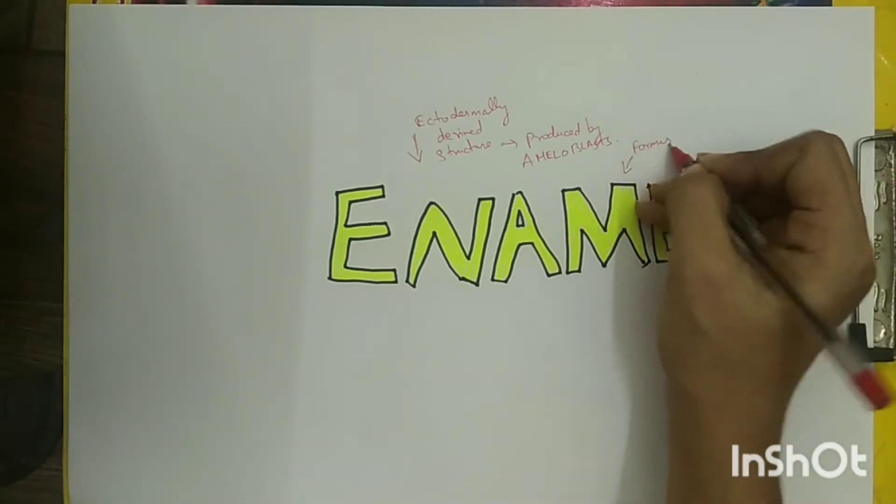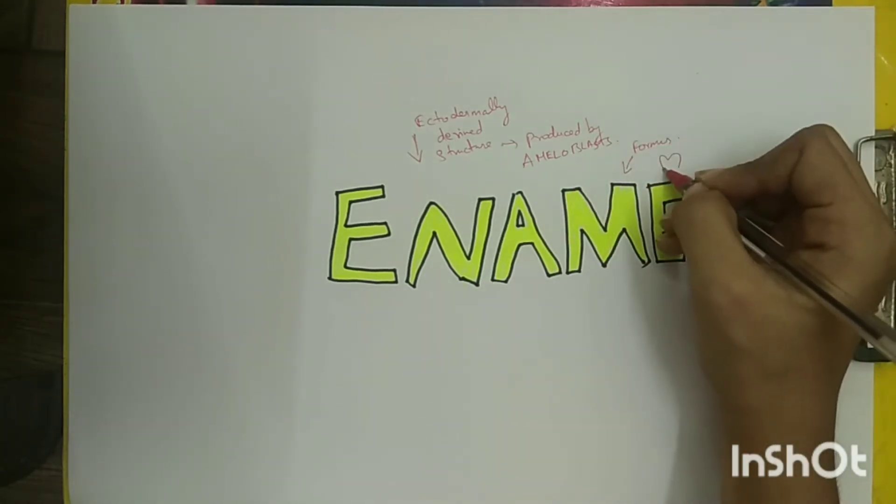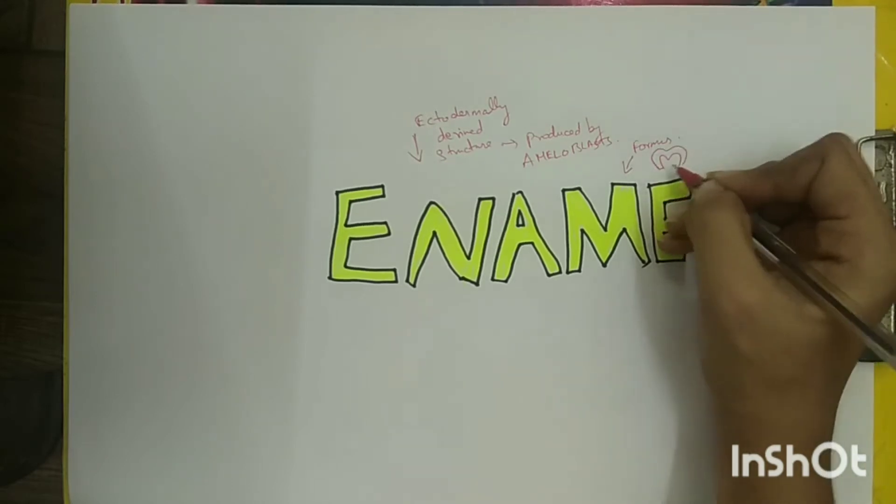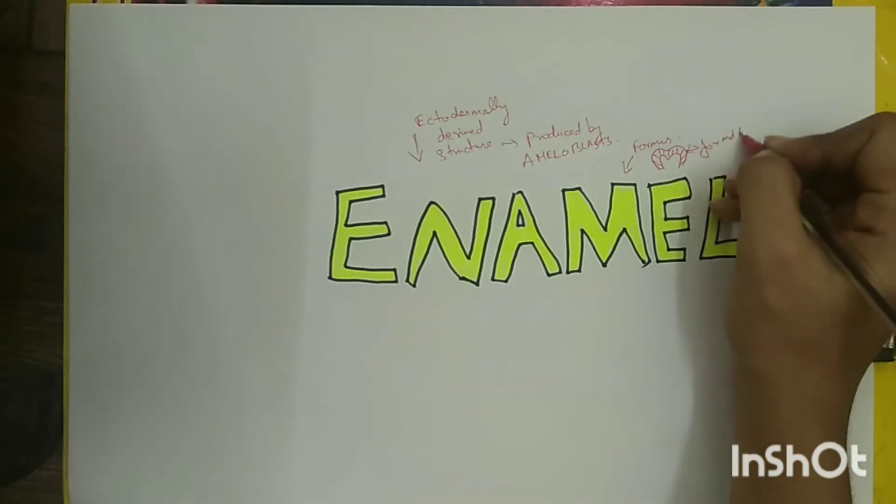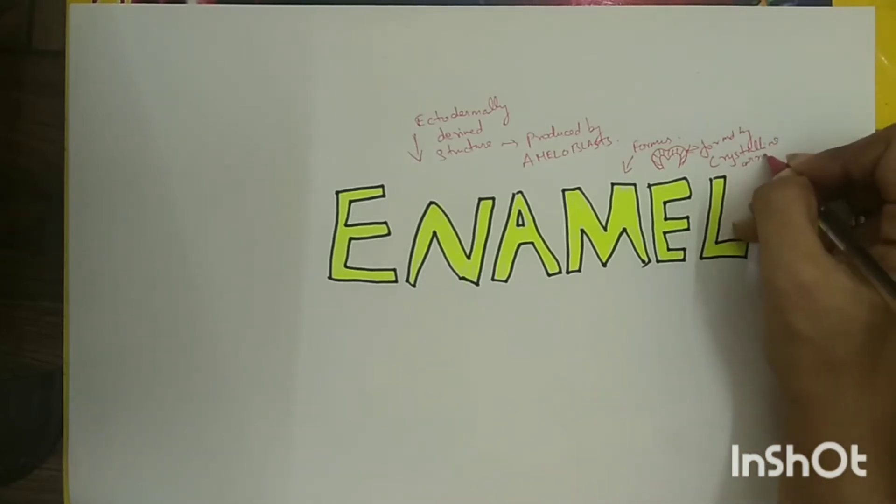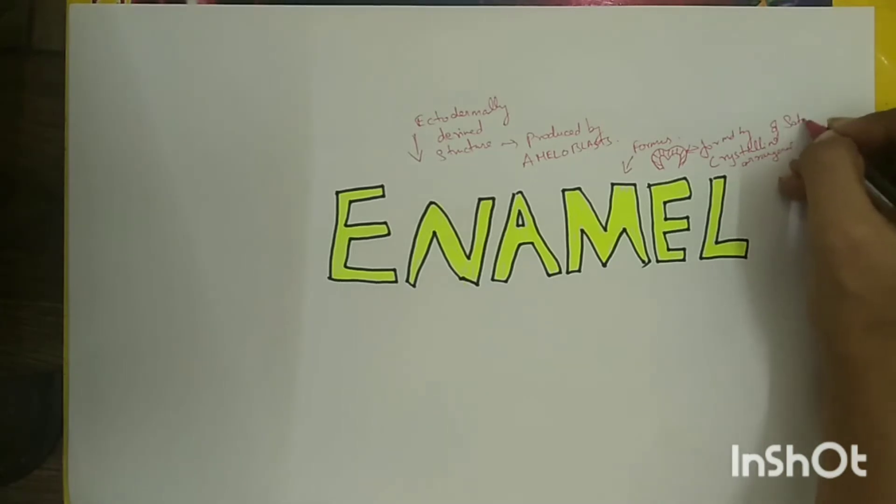It is a protective covering of the tooth and its high content of mineral salts along with a crystalline arrangement makes enamel the hardest calcified tissue in the human body. This property of enamel enables it to withstand the mechanical forces applied during mastication.